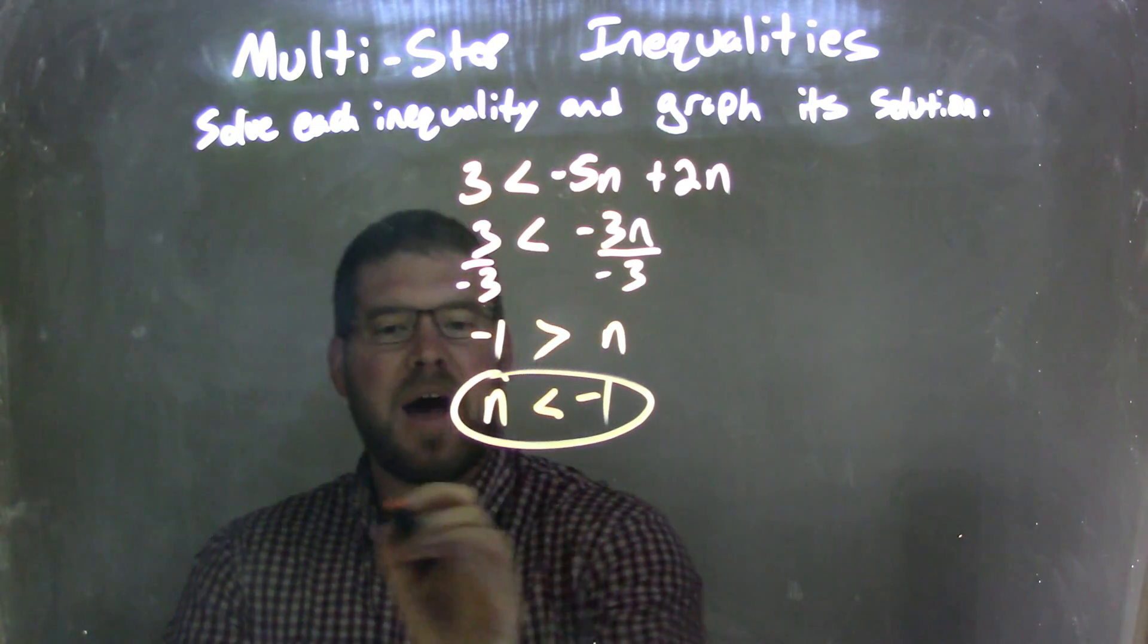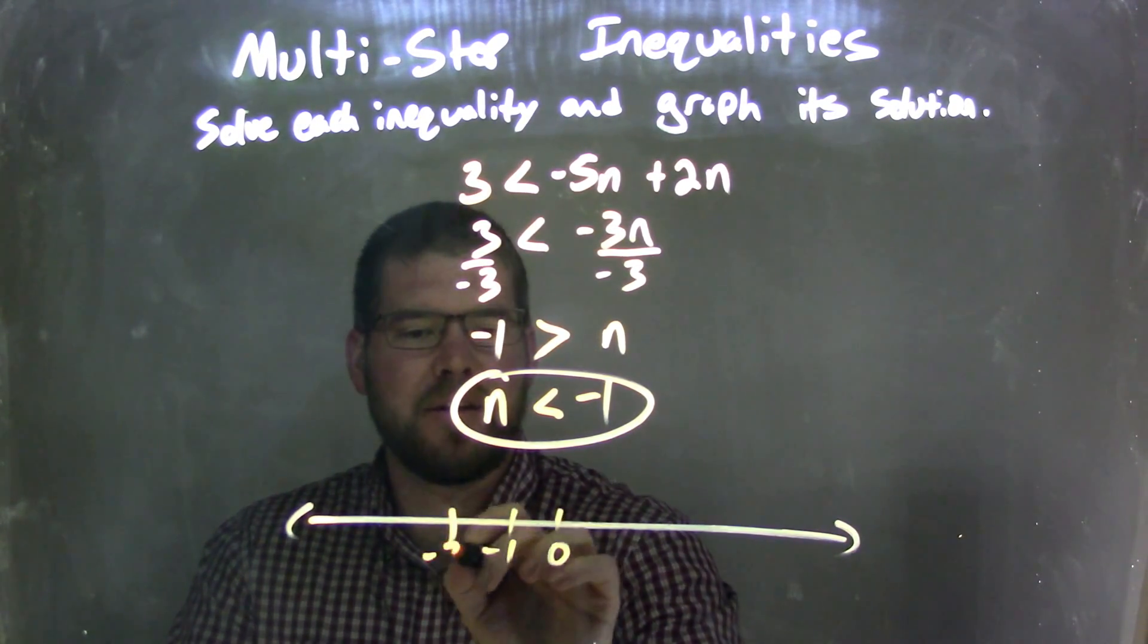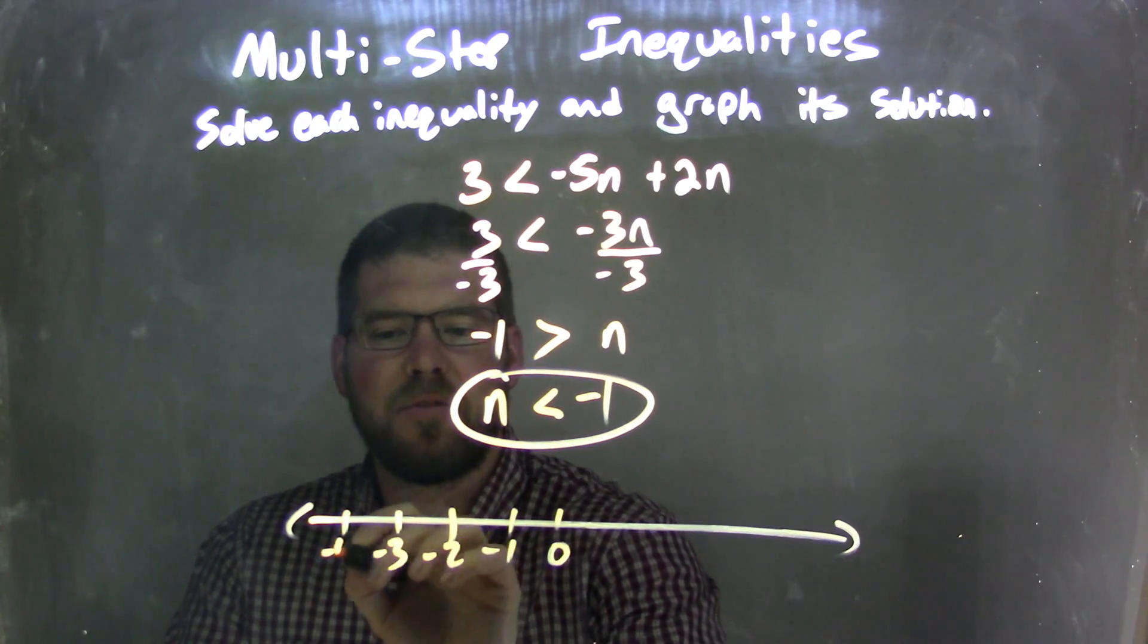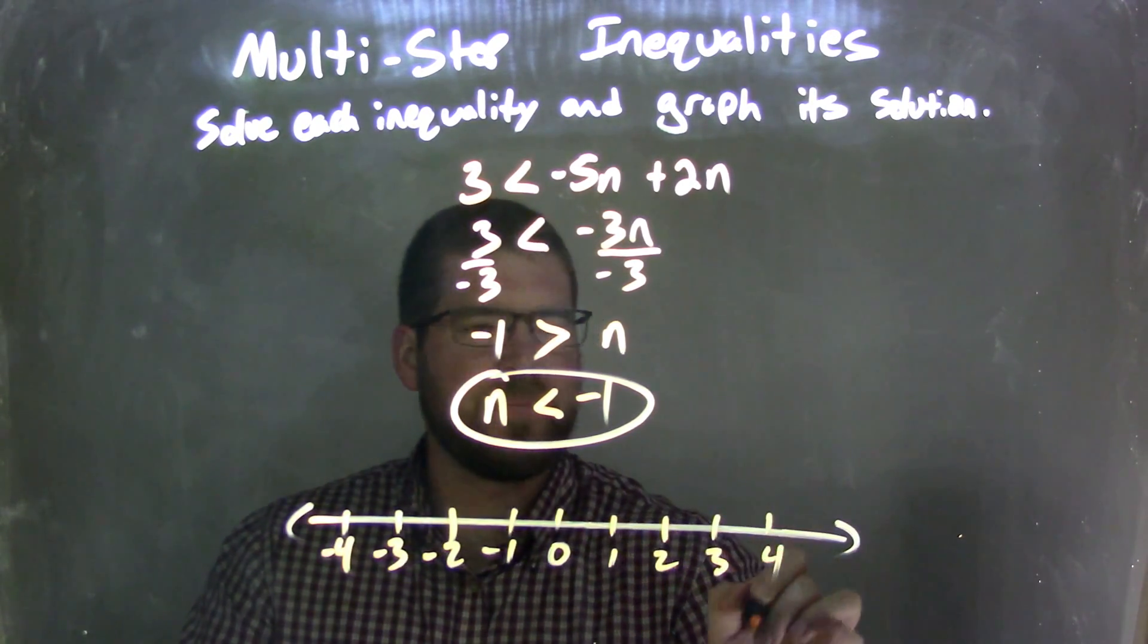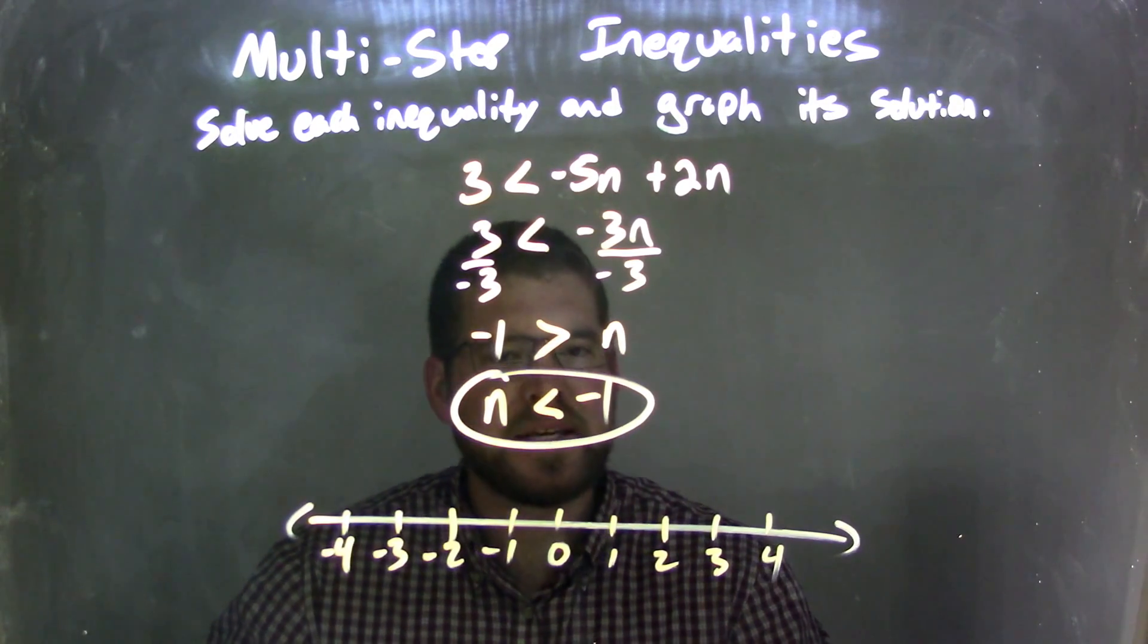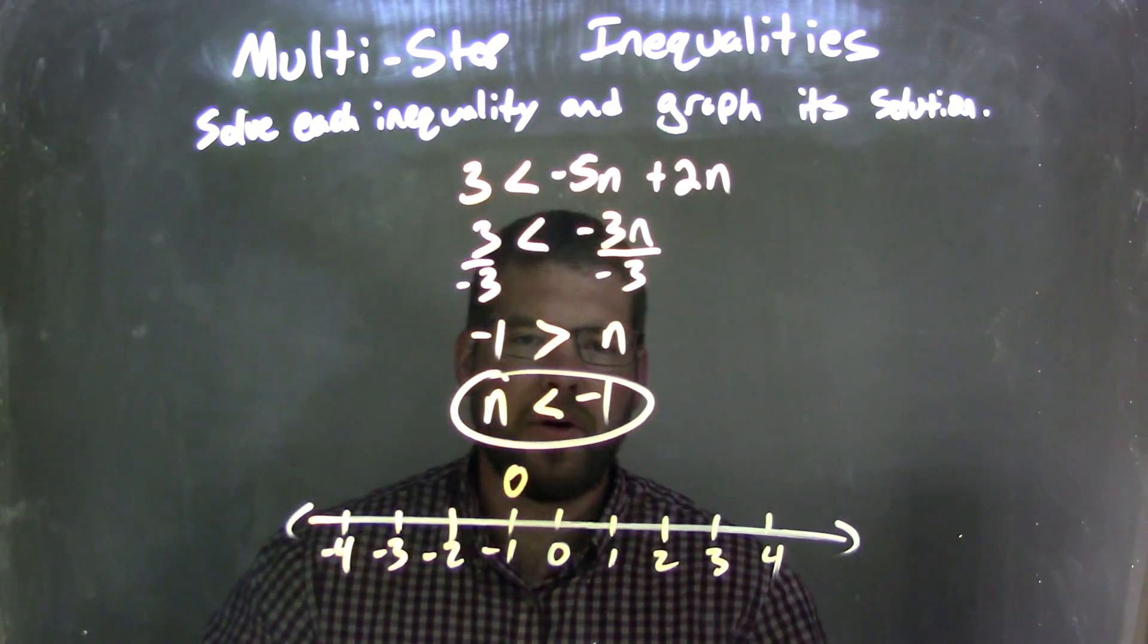So now I need to graph it. Okay, so I look at my number line here. 0, negative 1, negative 2, negative 3, negative 4. 1, 2, 3, 4. Okay. If n is less than negative 1, we have an open circle at the negative 1.